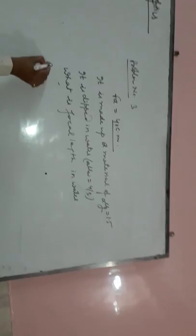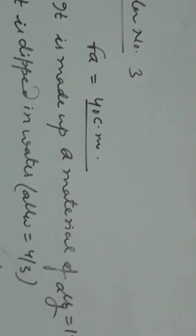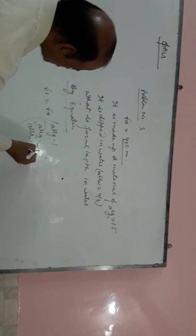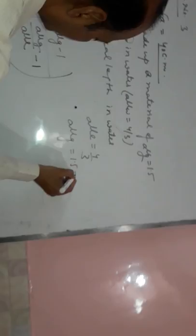f_L equals f_A times (mu_g minus 1) divided by (mu_L times mu_g minus 1). mu_L equals 4/3, mu_g equals 1.5, that is 3/2.